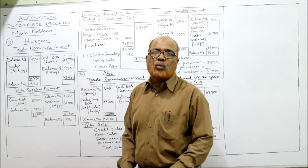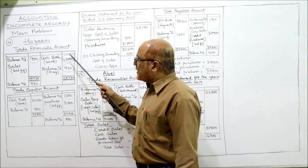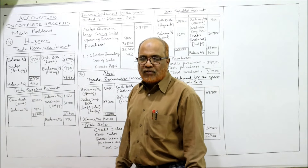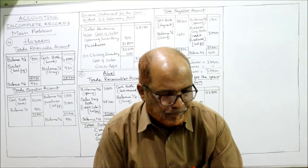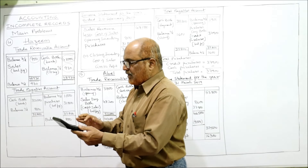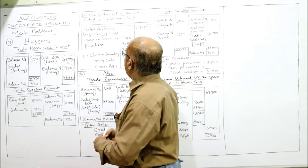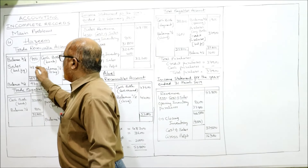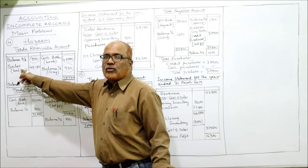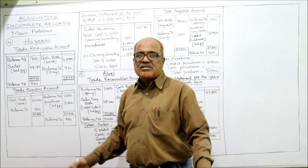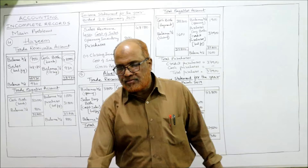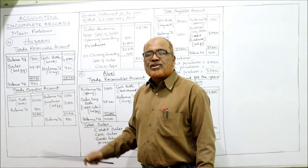The balancing figure gives us credit sales. Credit side: 48,000 plus 930 equals 48,930. Debit side has 750. So 48,930 minus 750 equals 48,180. This is the sales revenue — 48,180. The purpose of the trade receivables account is to find this sales figure.